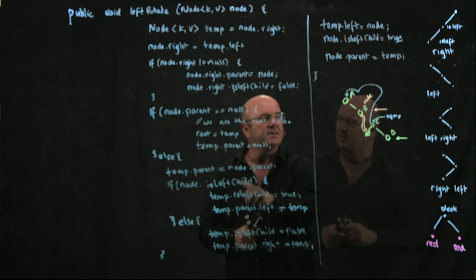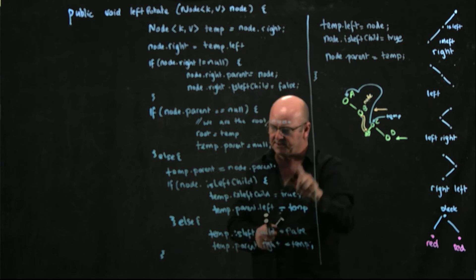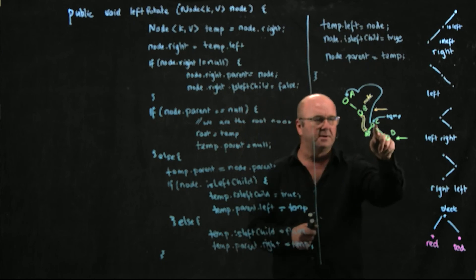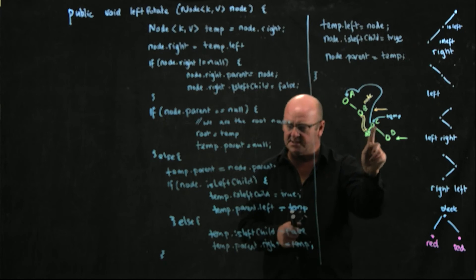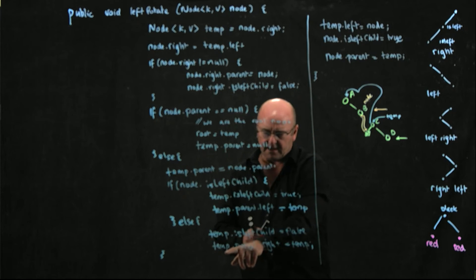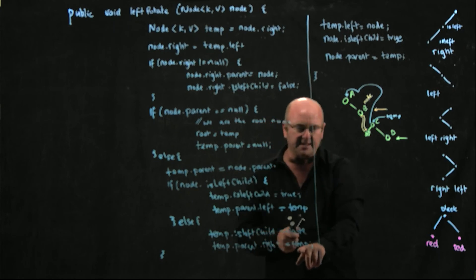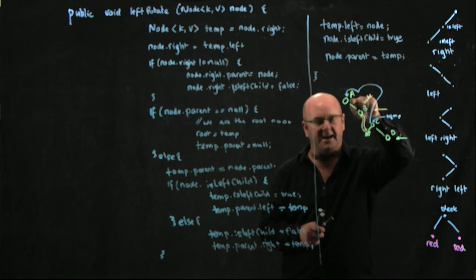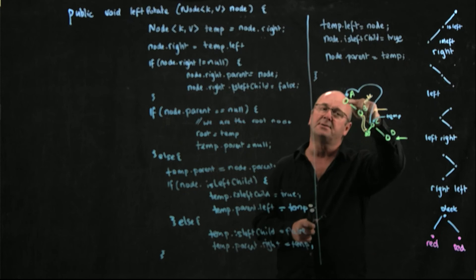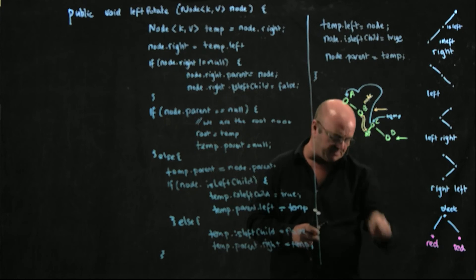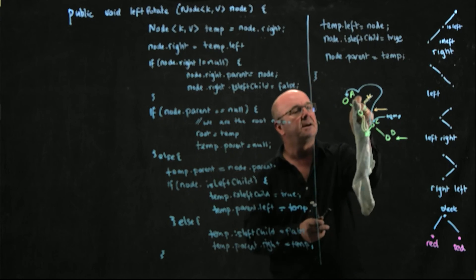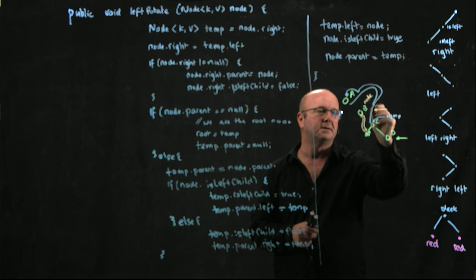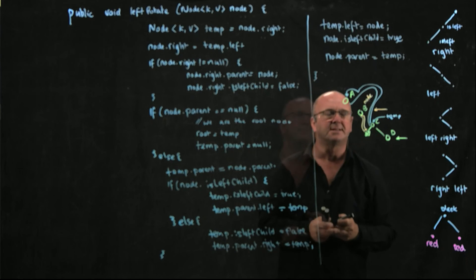Since node is a right child, not a left child, I set temporary node dot isLeftChild to false. Then temp dot parent dot right — which currently points to B — I break that link and make temp dot parent dot right point to temp. So now I have a pointer going from temp to parent and another pointer going from parent to temp.